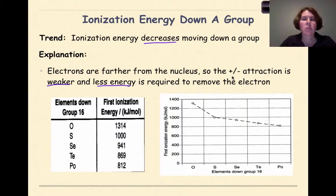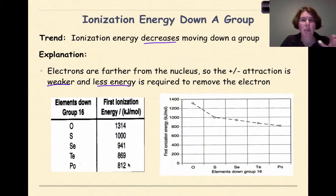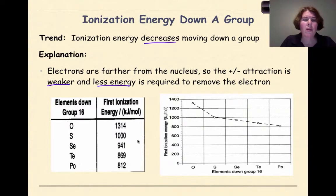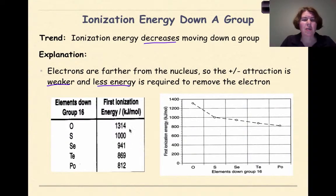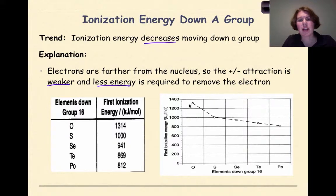If we look at group 16 in particular — oxygen, sulfur, selenium, tellurium, and polonium — we'll see that as we go down the group and add more shells, the valence electrons get farther and farther away, and less energy is needed to remove them. Oxygen, whose valence electrons are in the second shell, compared to polonium where the valence electron is much farther away, shows a big difference. The general trend is that as you go down the group, ionization energy will also decrease.